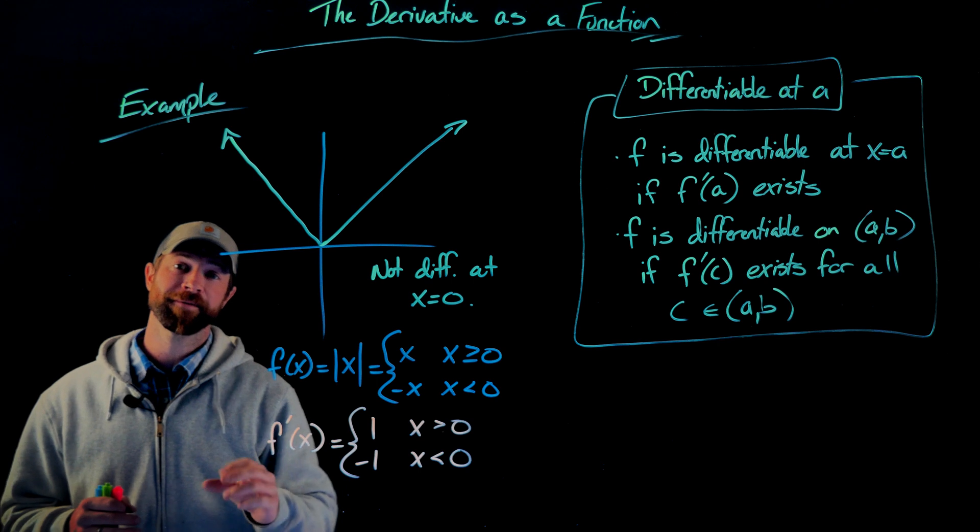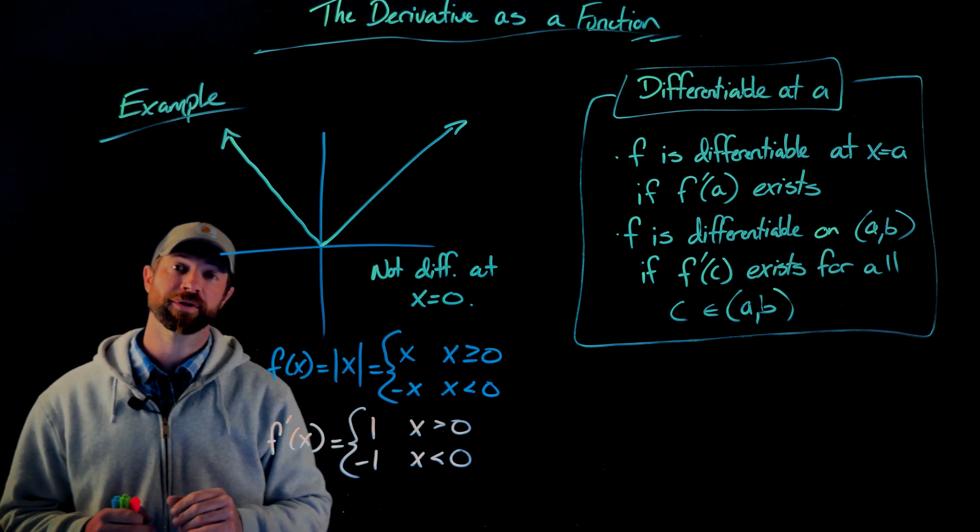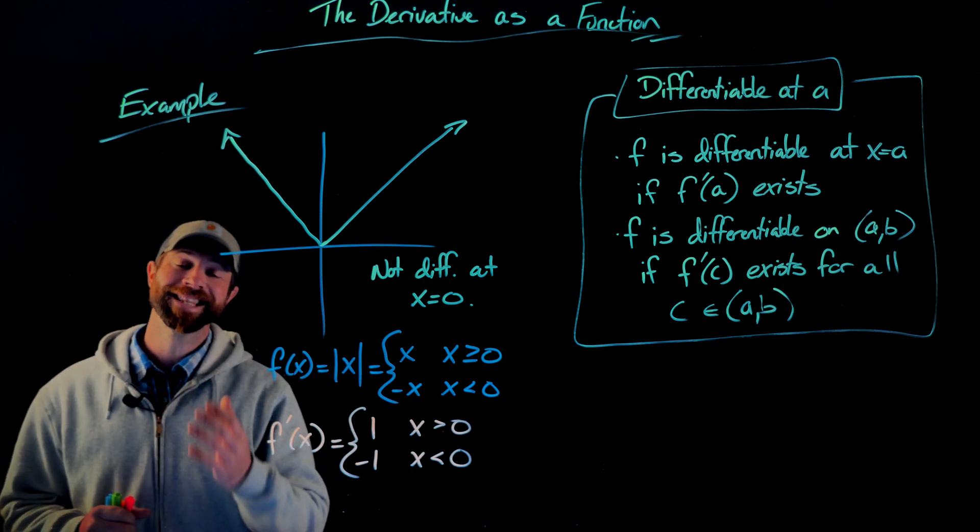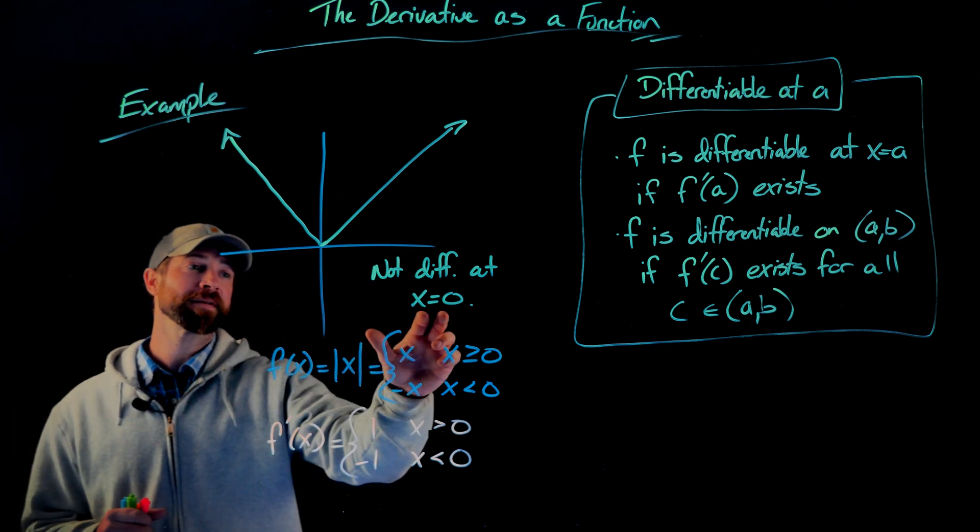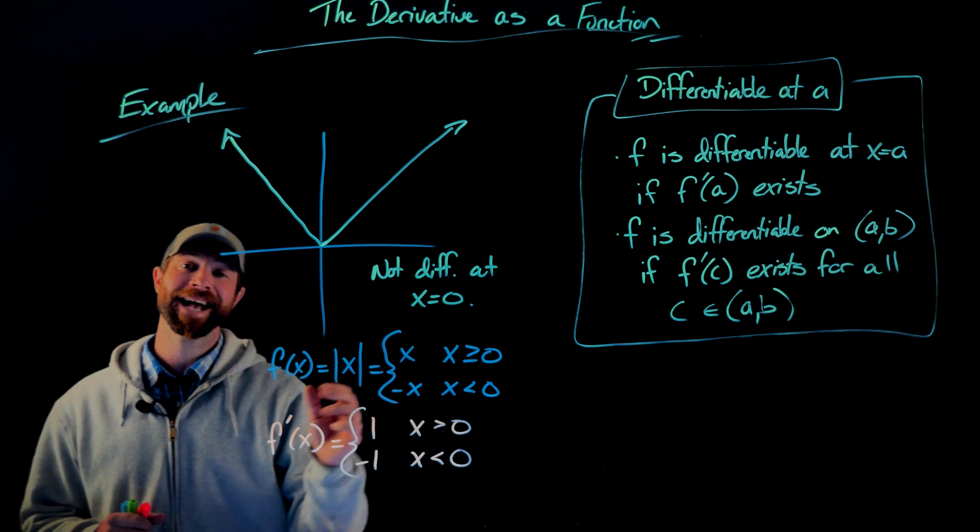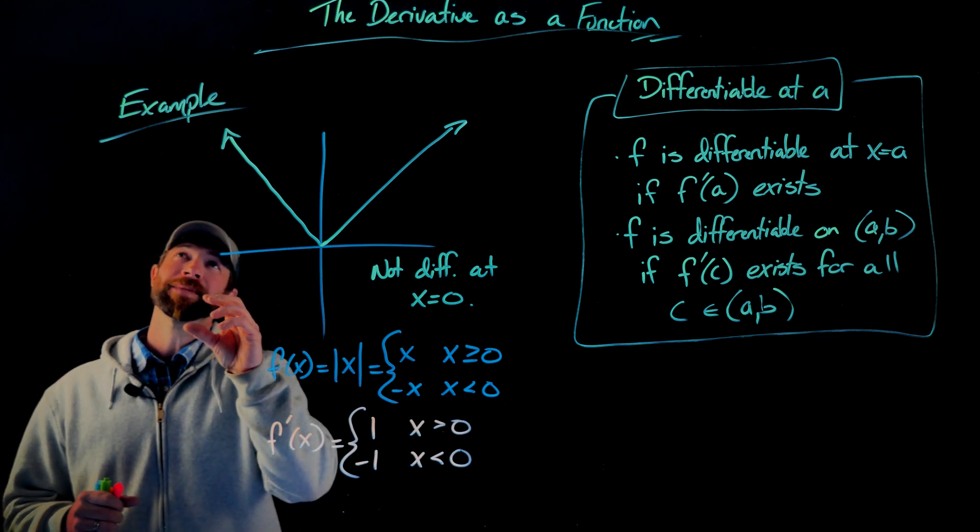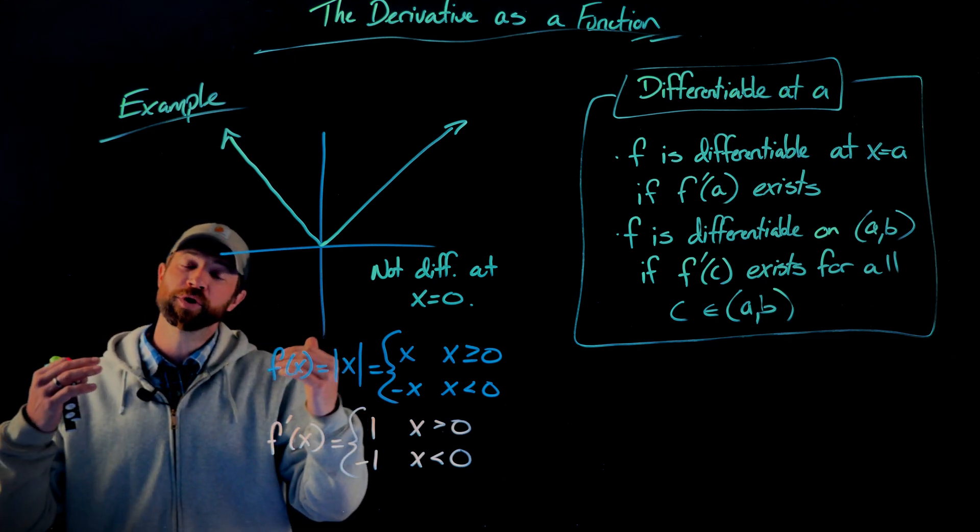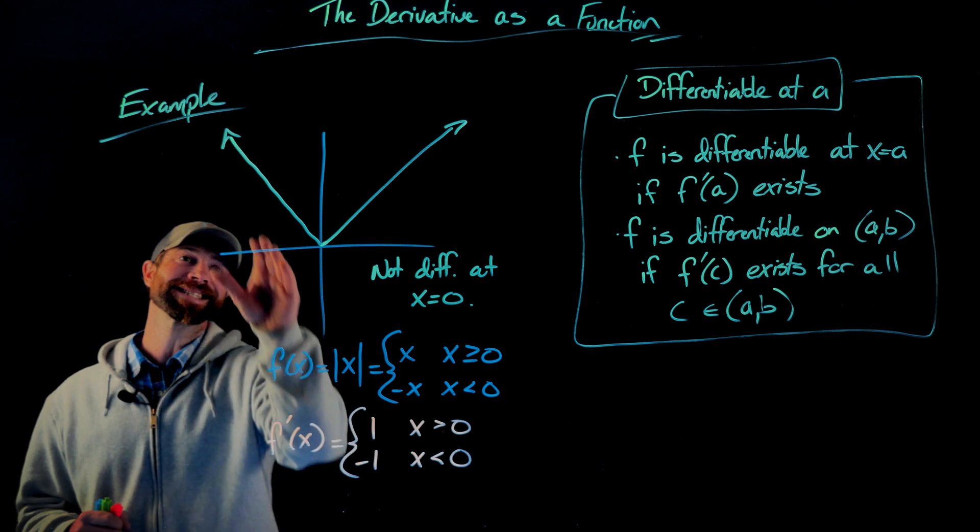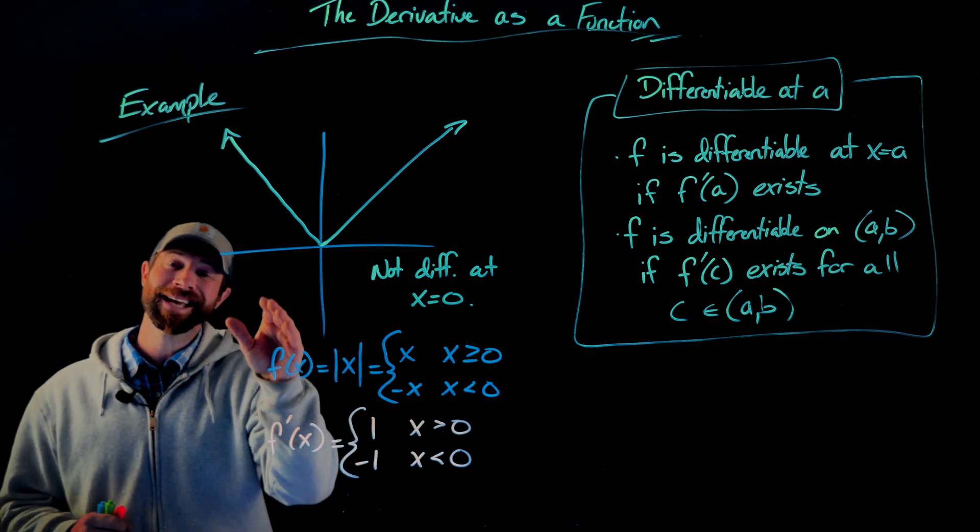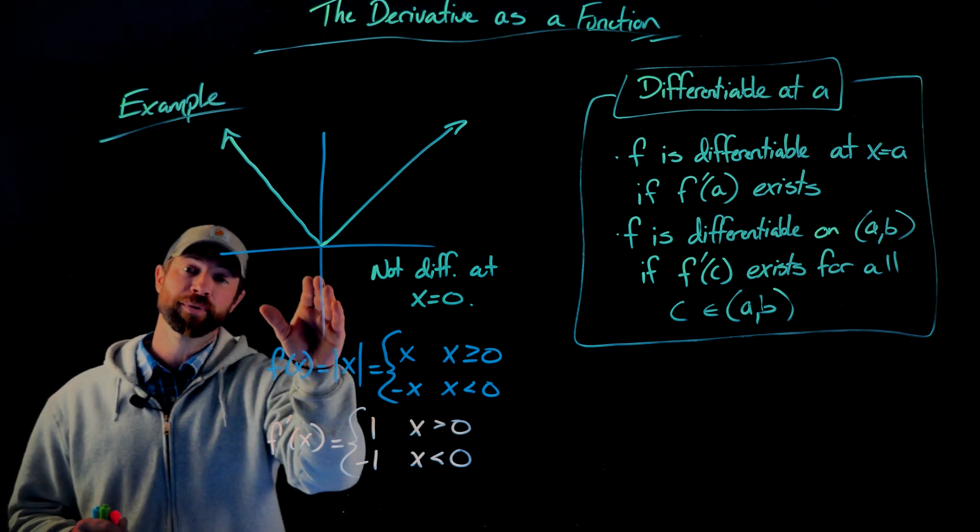We have here the piecewise definition of the absolute value function also. But graphically, in this case, this function is not differentiable at x equals zero because, remember, the derivative is the limit as the slopes approach from both sides. In this case, the slopes from the left are negative one always, even as you approach zero.